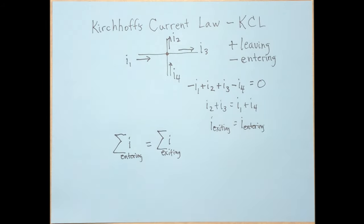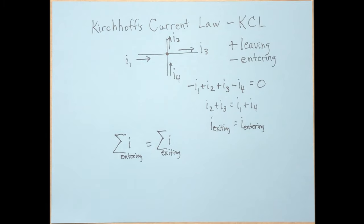KCL is just a restatement of conservation of energy. Currents are charges, and charges carry energy, so the sum of energy going in equals the sum of energy going out. If more energy went in than came out, there'd be a buildup and things would melt. If more came out than went in, that would be a perpetual motion machine defying physics. So what goes in must come out — that's all KCL says.